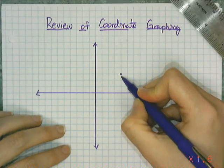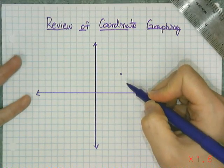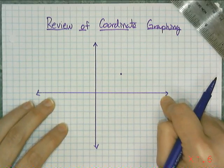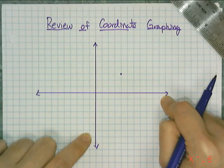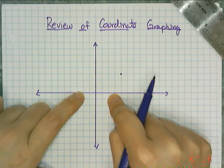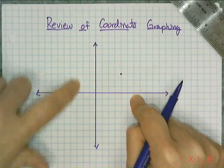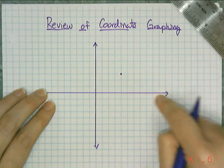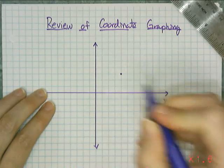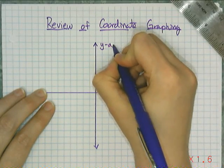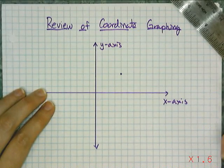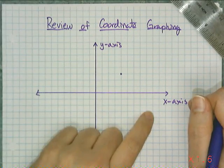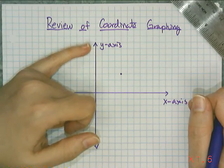So right now this point has really no location because I haven't given you a scale for my axes. So this axis is just a number line and this axis is just a number line. They're perpendicular to each other so that I can have a horizontal location and a vertical location for every single point in the plane. We call the horizontal axis the x-axis and we call the vertical axis the y-axis. And when we graph data, the x-axis is always where you put your independent variable and the y-axis is always where you put your dependent variable.